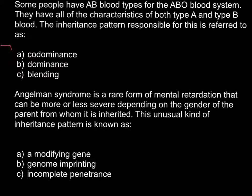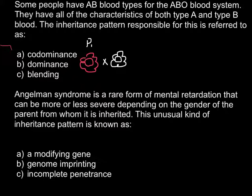Let me start with answer C: blending. I want to use flowers as an example because it's very easy to understand and visually represent. Imagine that we have a red-flowered plant and we cross it with a white-flowered plant — parent one and parent two. If we have blending, the outcome would be a pink flower — intermediate between the two parents. This F1 generation result is blending.